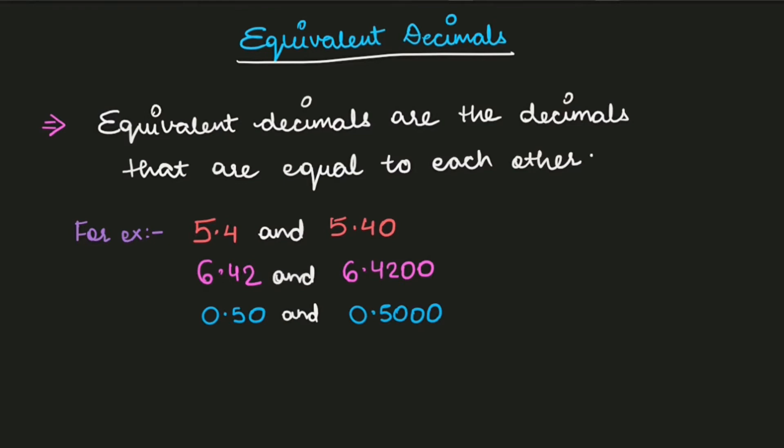You just need to see that this is 5.4 in the first one and 5.4 in the second one. After this four, you can place as many zeros as you want. You just need to see that the zero adds no value to the number — both decimals are equal to each other.